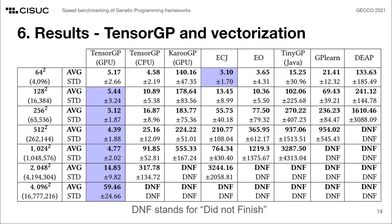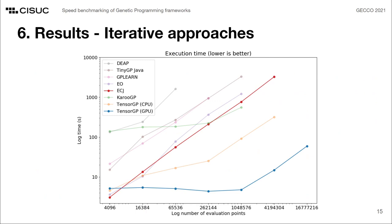Additionally, TensorGP on GPU was the only approach to finish runs on the allocated time slot for the last test set with 16 million data points. Another interesting property verified for vectorized approaches is that they don't exhibit linear behavior for the first test sets. In fact, the overhead of dealing with tensor data is so overwhelming for smaller domains that these approaches spend most time building and moving tensors rather than executing genetic programming operations.